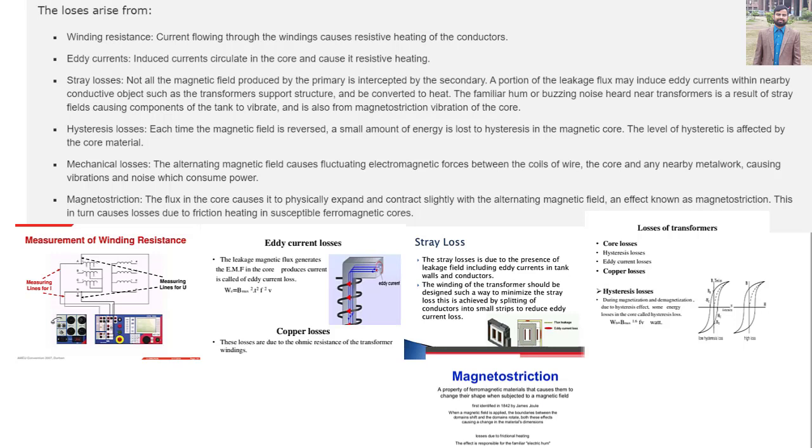A portion of the leakage flux may induce eddy currents within a nearby conductive object such as the transformer support structure and be converted to heat. The familiar hum or buzzing noise heard near transformers is a result of stray fields causing components of the tank to vibrate and is also from magnetostriction vibration of the core.